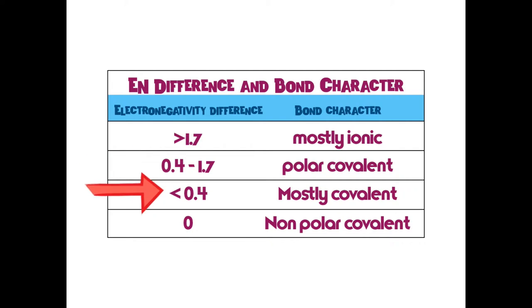In the middle, if it's less than 0.4, then it is mostly covalent, and they're sharing it pretty evenly. And then the last category is non-polar, meaning there is no difference in charge from one end to the other. And the difference is zero.